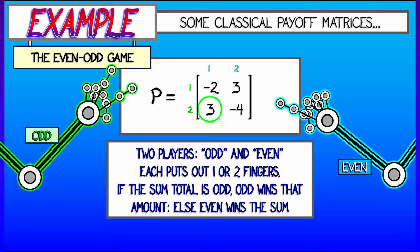So for example, if player-odd puts out two fingers, player-even puts out one finger, two plus one is three. Player-odd wins that amount.